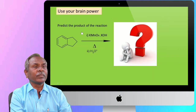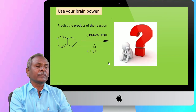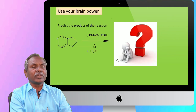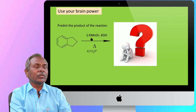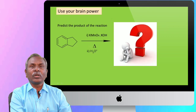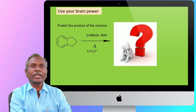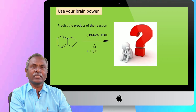Now, predict the product of the reaction. Suppose you are given a structure and asked what will be the product. You are given an oxidizing agent in alkaline medium, and the second step is acid hydrolysis. You have to find out the final product of the reaction.